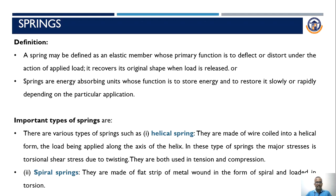Next is spiral springs. The spiral springs are made of a flat strip of metal wound in the form of a spiral and loaded in torsion. The helical springs are used in both tension and compression type, while the spiral springs are loaded in the form of torsion.